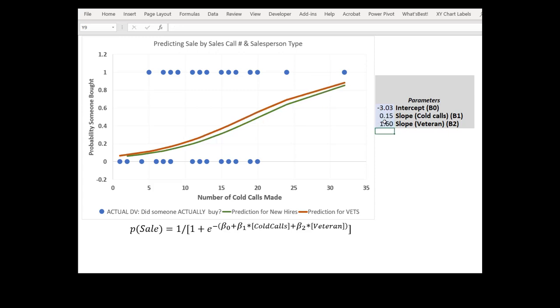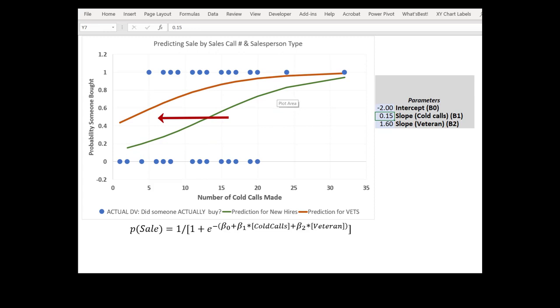We'll switch this back to 1.6. Okay, now what does this intercept do? I'm going to drop the intercept down to negative 2. Notice how it just took the entire curve and shifted them to the left.